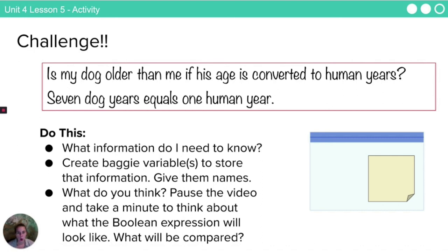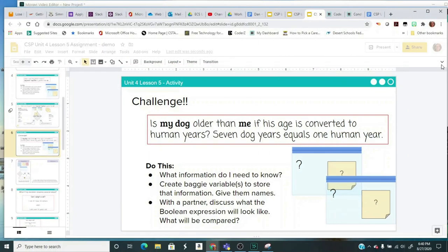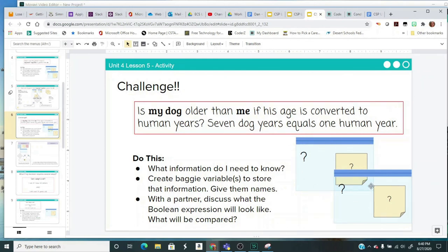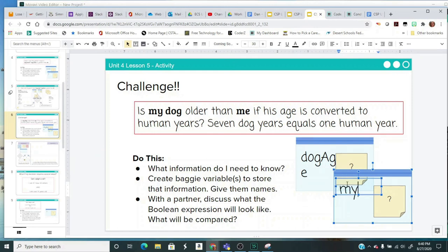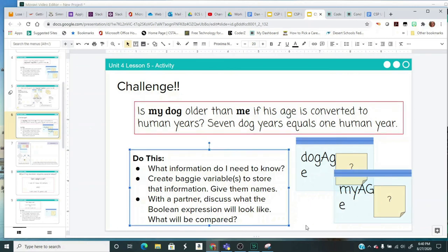So here's a challenge. Is my dog older than me if his age is converted to human years? Just so you know, seven dog years equals one human year. So every year that I grow older by one year, in dog years, my dog goes older by seven years. So I want you to, again, think about what information needs Joe. Create a baggie or baggies to store that information. Give them names. And then what do you think? Pause the video. Take a minute to think about what the Boolean value and expression will look like. What will be compared? Now we're on page six of your assignment. And we're going to try out, decide what variables do we need for this. So talk about the dog is being older than me. And we're talking about ages. Okay. So the first one might be something like dog age. And the second one might be something like my age. So it's a little bit confusing because we're talking about being older, but really we're talking about ages here. So think about that. Now you can, we'll return back to the video.